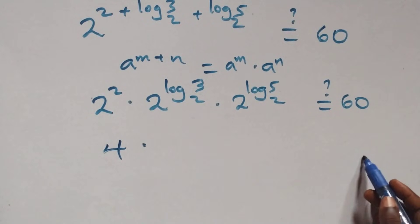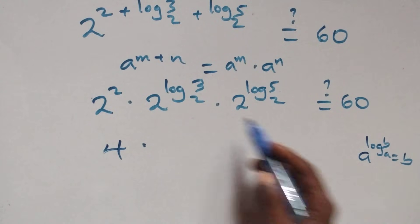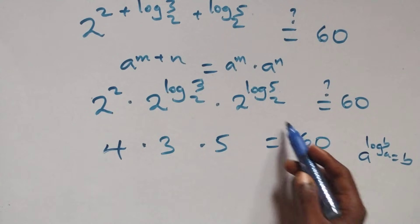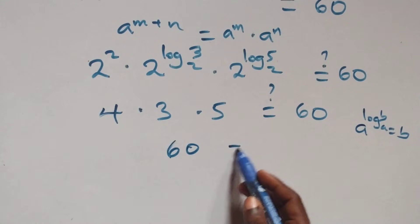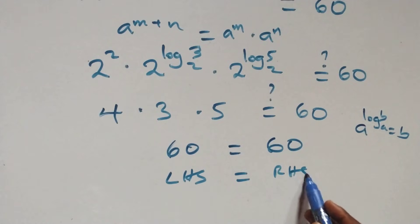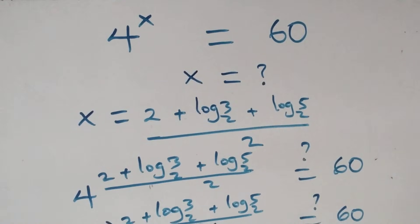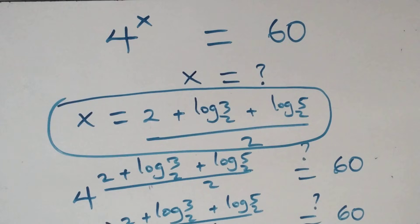Following the rule that a raised to power log base a of b equals b, we have 4 times 3 times 5. That gives 4 × 15 = 60, which equals 60 on the right-hand side. The left-hand side equals the right-hand side, and therefore we conclude that x equals (2 + log₂3 + log₂5) / 2 satisfies the given problem. Thank you for watching — don't forget to subscribe for more videos.